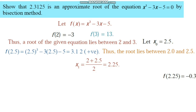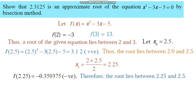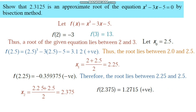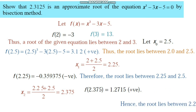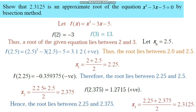Since f(2.25) is negative and f(2.5) is positive, the root lies between 2.25 and 2.5. The next approximation is the average of 2.25 and 2.5, giving 2.375. We compute f(2.375), which is positive. Hence the root lies between 2.25 and 2.375, and we have obtained the required approximation root of the equation: 2.3125.